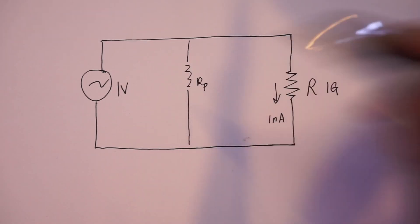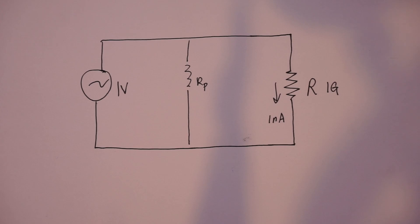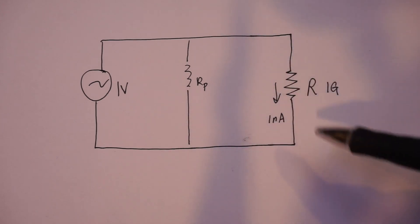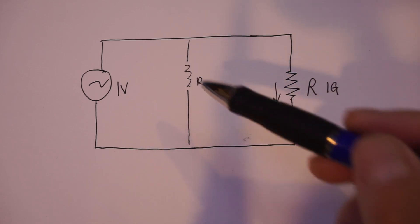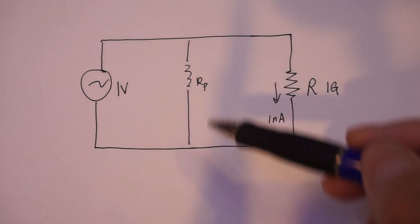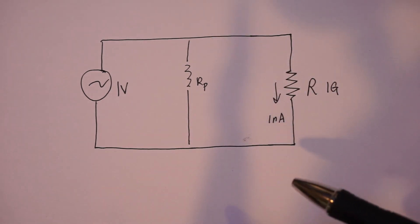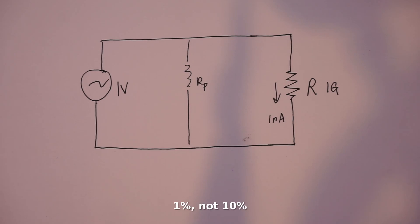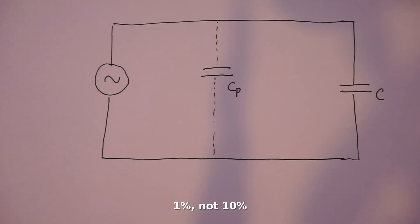This parasitic resistor is in parallel to the device under test, which would obviously impact the accuracy of the measurement. A 10 picoamp leakage through this parasitic resistor, which is definitely possible, would affect your measurement accuracy by 10 percent.